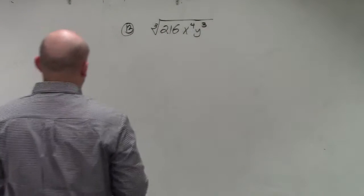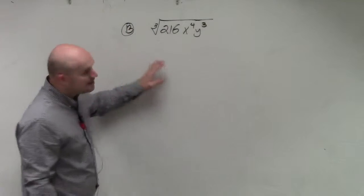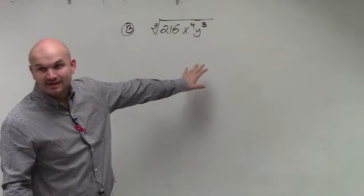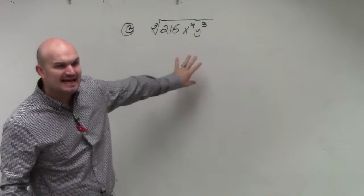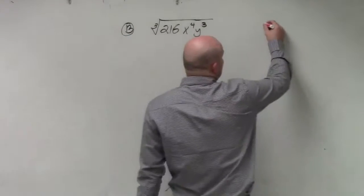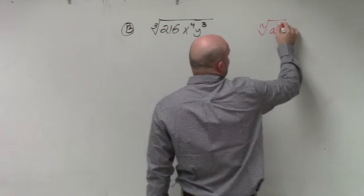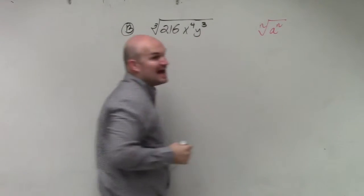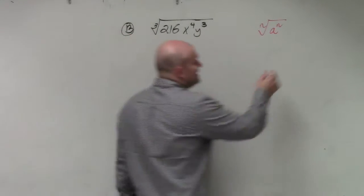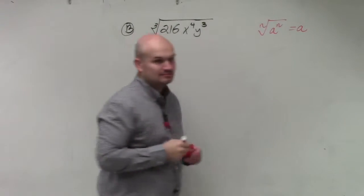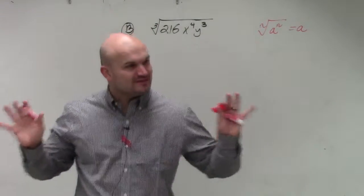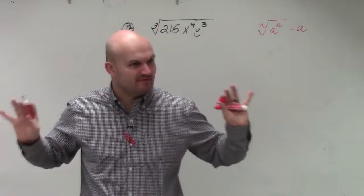If you guys remember, the main important thing when simplifying is using our identity element. The identity element basically states when you have the nth root of a to the nth power, that equals a. That was our main important thing when we talked about simplifying.